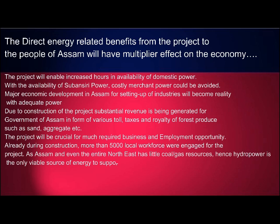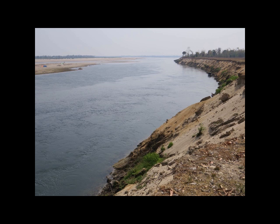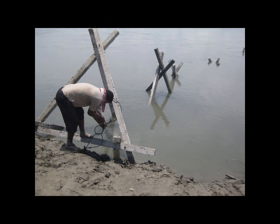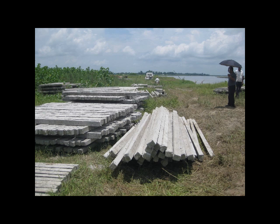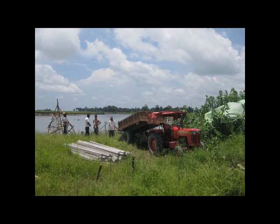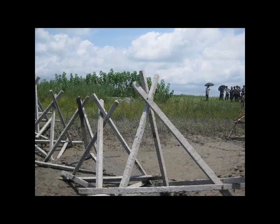The project will be crucial for much-required business and employment opportunity. Already during construction, more than 5,000 local workforce were engaged for the project. As Assam and even the entire Northeast has little coal and gas resources, hydropower is the only viable source of energy to support overall economic development of the state. Besides energy, flood attenuation, moderation, and minimizing erosion benefits can further be multiplied if Assam utilizes the water for irrigation and multiple cropping by constructing suitable barrages and canal systems.